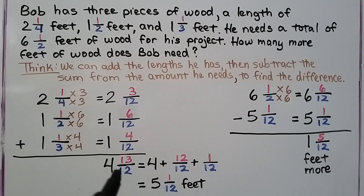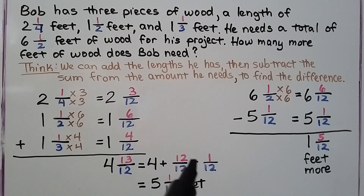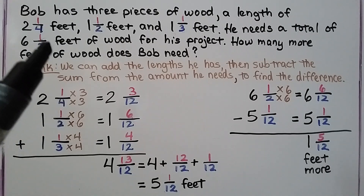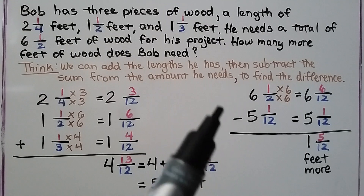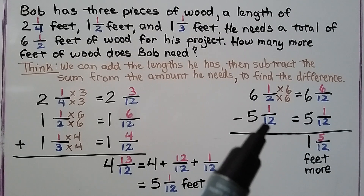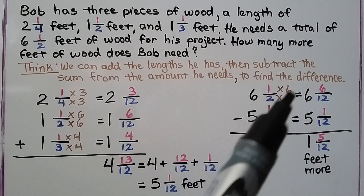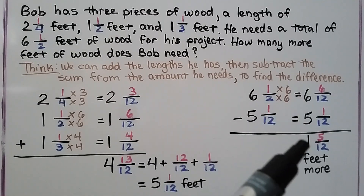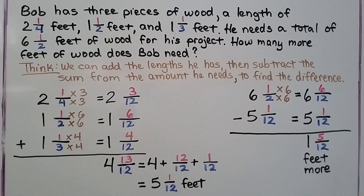4 and 13 twelfths is the same as 4 plus 12 twelfths plus 1 twelfth, which equals 5 and 1 twelfth feet — that's how much he has. He needs 6 and a half, so we write 6 and a half minus 5 and 1 twelfth. They can meet at 12: 2 times 6 is 12, so we multiply 1 times 6 to get 6 twelfths. Subtracting: 6 twelfths minus 1 twelfth is 5 twelfths. 6 minus 5 is 1. He needs 1 and 5 twelfths feet more of wood for his project.